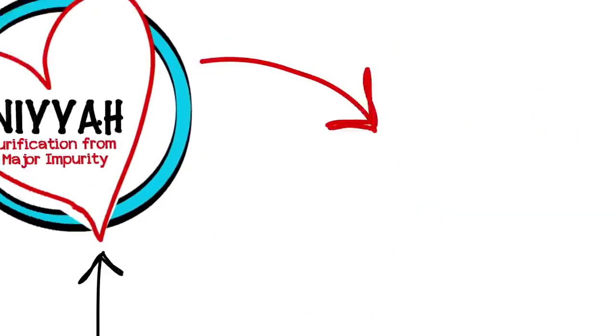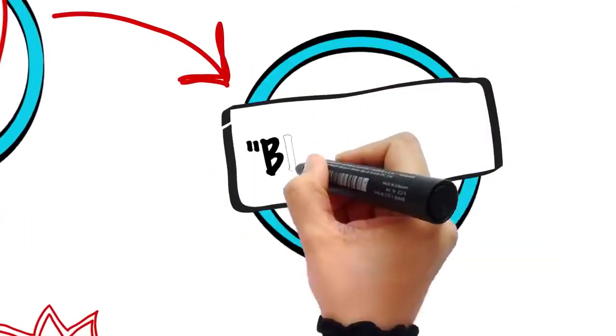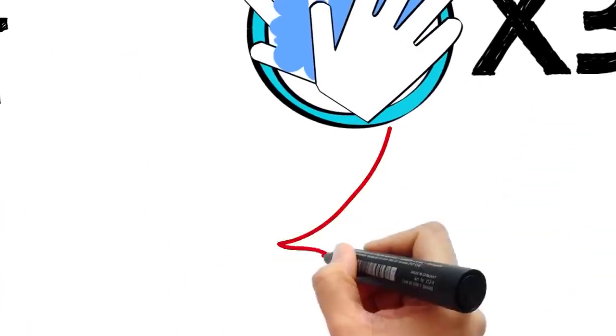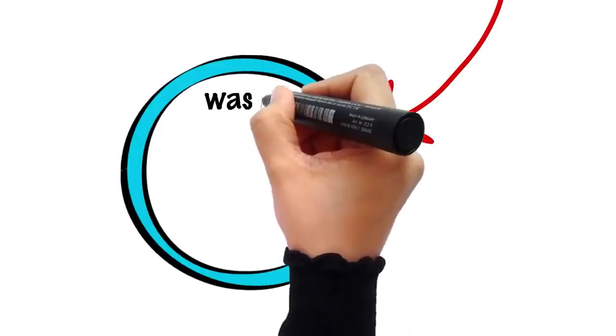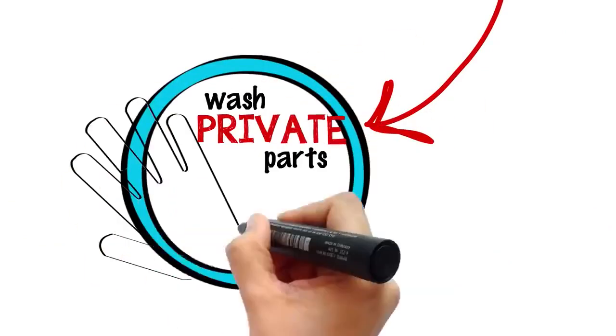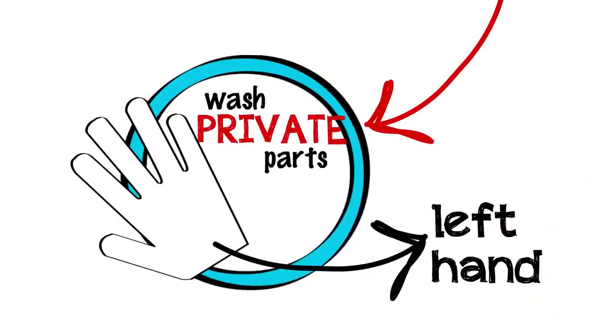Then say bismillah. Wash your hands three times. Then with your left hand, wash your private parts and anywhere else that is contaminated with traces of impurity.